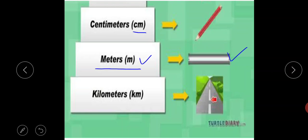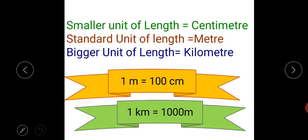Third is kilometer, written as km. This unit is used to measure bigger lengths or long distances. For example, distance of your school from your home. So we can say the smaller unit of length is centimeter. Meter is called the standard unit of length, and the biggest unit of length is kilometer.